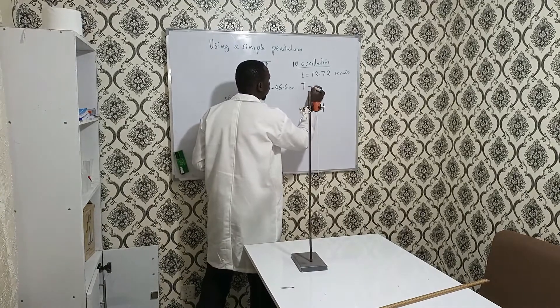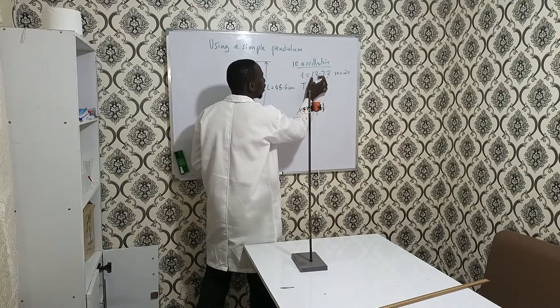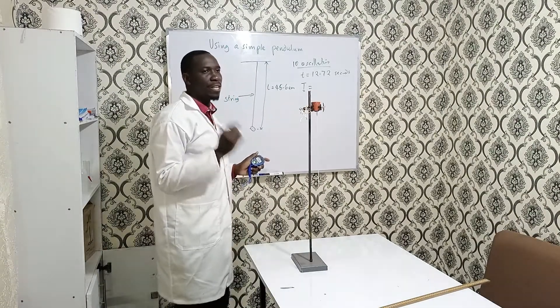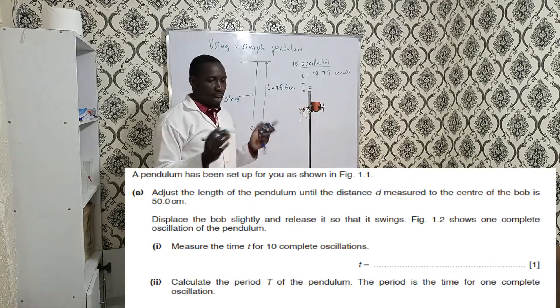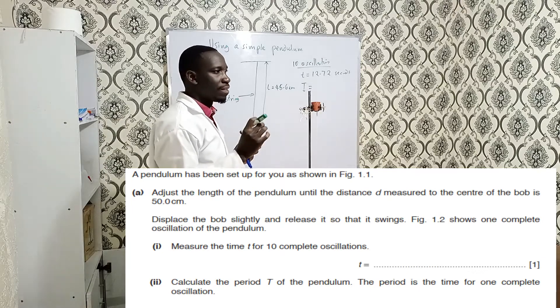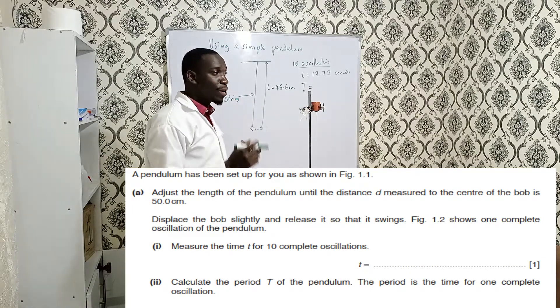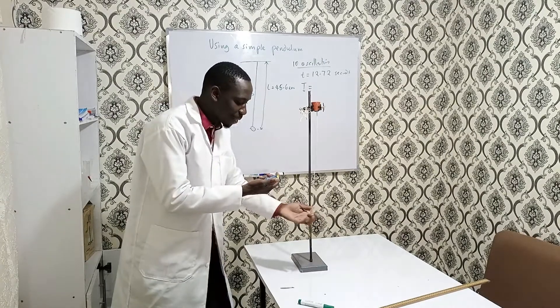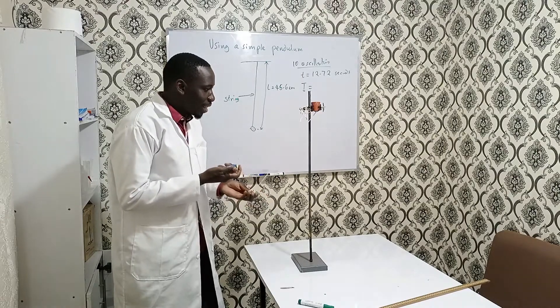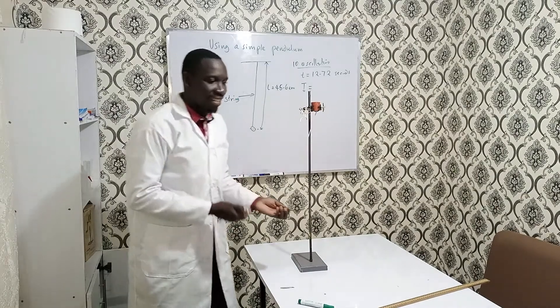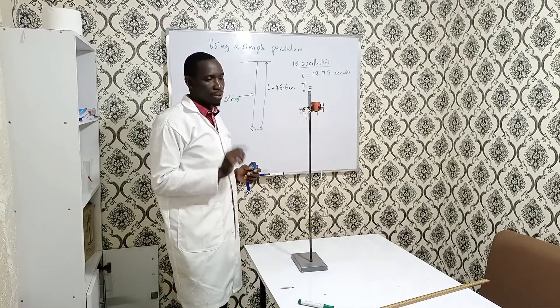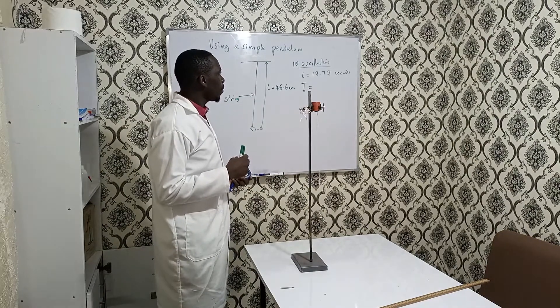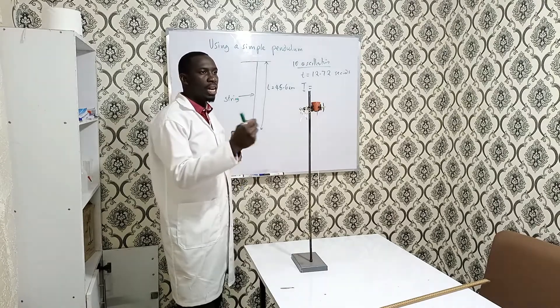Now to find the time period from here. Remember, 10 oscillations takes 12.72 seconds. The time period - I have seen students making a mistake in this case. In Cambridge, the question guides you that the time period is the time taken for one oscillation. What a student will do is take the time for one oscillation, ignore the 12.72 seconds, and record the time for one oscillation. No, that is wrong. We are taking 10 oscillations here for repetition. Remember, repetition minimizes the error that may occur due to reaction time.